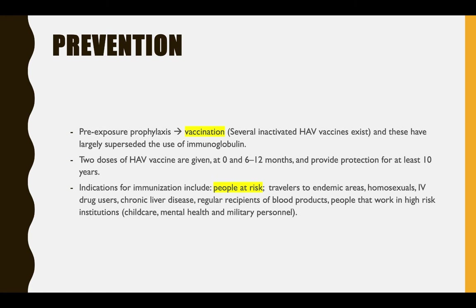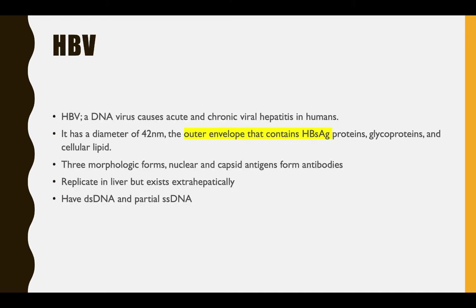For prevention, there is a vaccine. It is given twice in children, and it reduces shedding in children by reducing infection. This makes people who are older more susceptible, but the overall numbers of cases will be reduced.